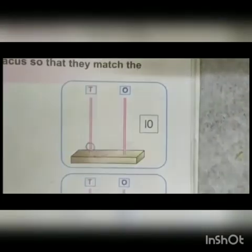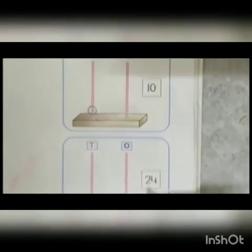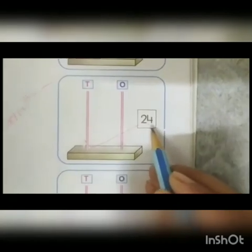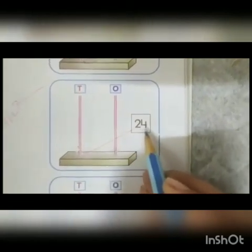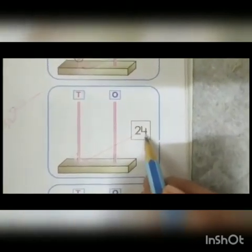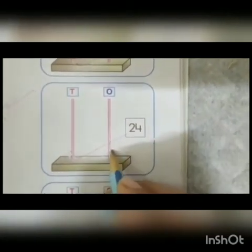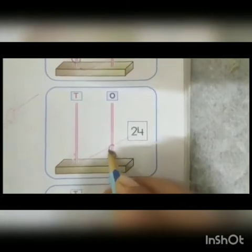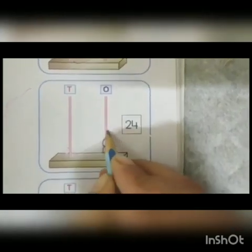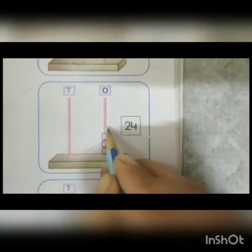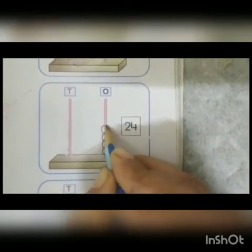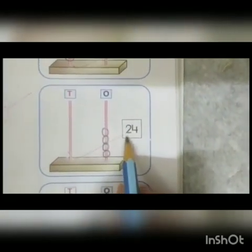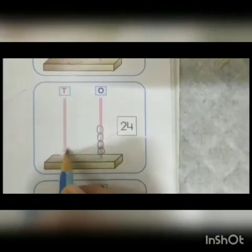Come to the next. Which number is this? 24. How many ones are there? 4. Now we will draw 4 beads: 1, 2, 3, 4. And how many tens are there? 2. Now we will draw 2 beads.